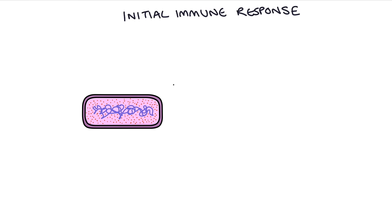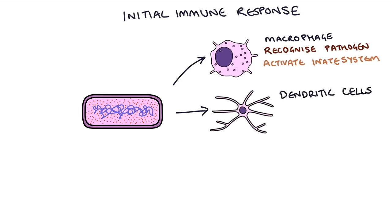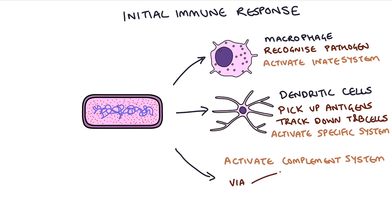Three things happen. First, macrophages recognize the pathogen and activate the innate immune system. Second, dendritic cells pick up antigens from the pathogen and then head off in the blood and lymphatic systems to track down the relevant T and B cells of the specific immune system and activate them. Third, the invading pathogen activates the complement system directly via the lectin pathway and the alternative pathway, and we'll talk a bit more on those later.